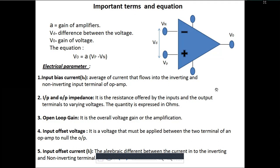Third is open-loop gain: when the op-amp is used without any feedback, that is open loop, and the overall voltage gain or amplification is the open-loop gain. Fourth is input offset voltage: it is the voltage that must be applied between the two terminals of an op-amp to null the output. Fifth is input offset current: it is the algebraic difference between the currents into the inverting and non-inverting terminals.